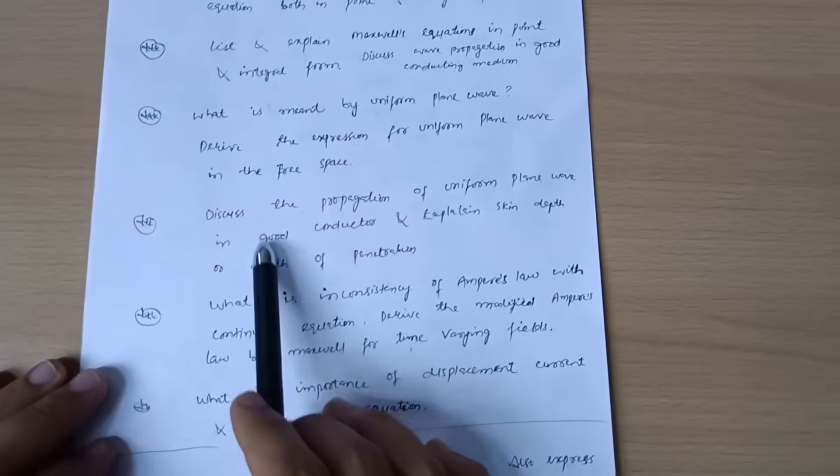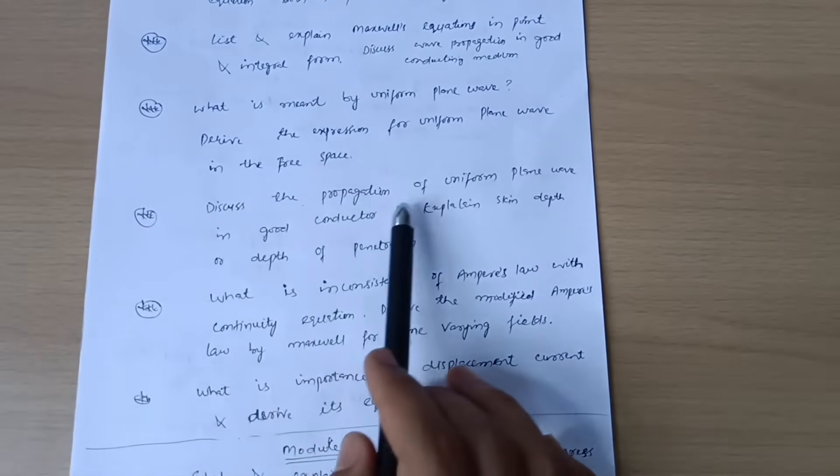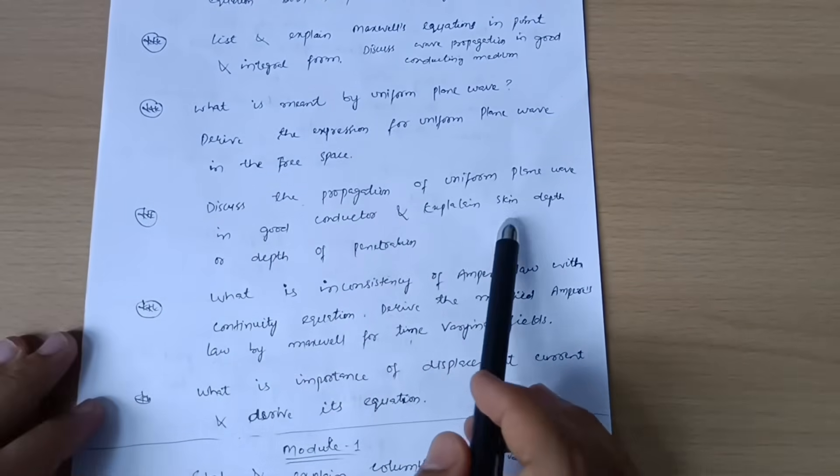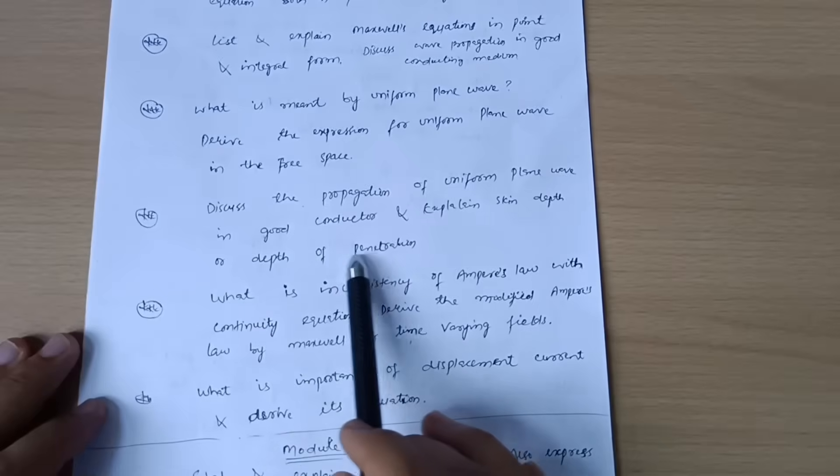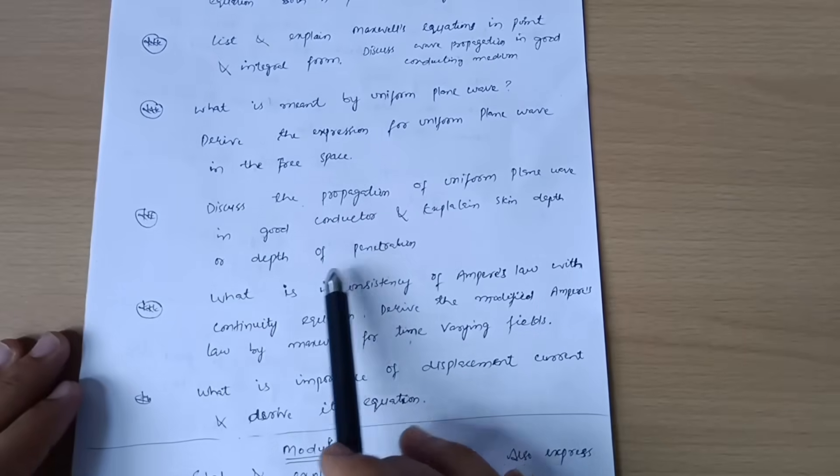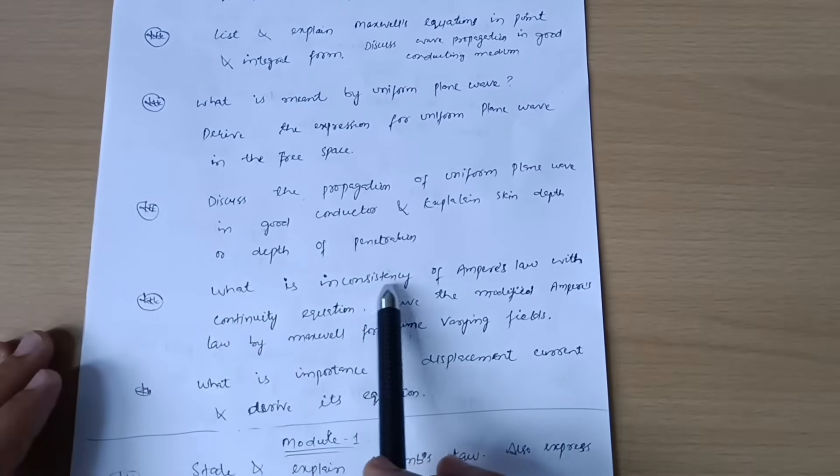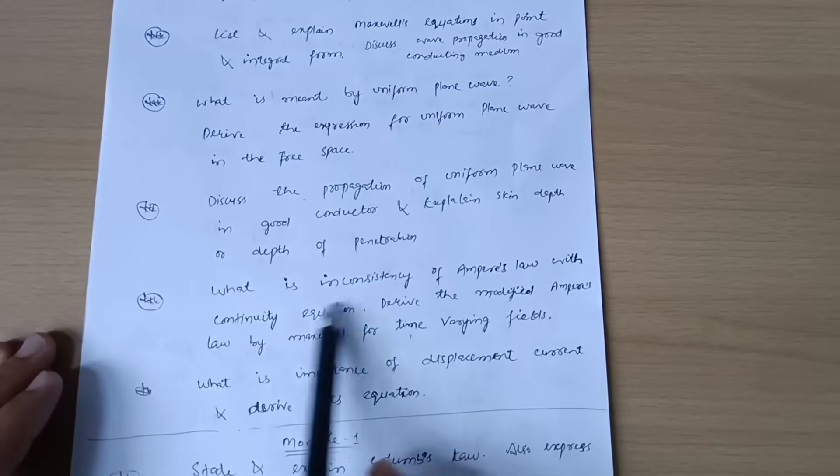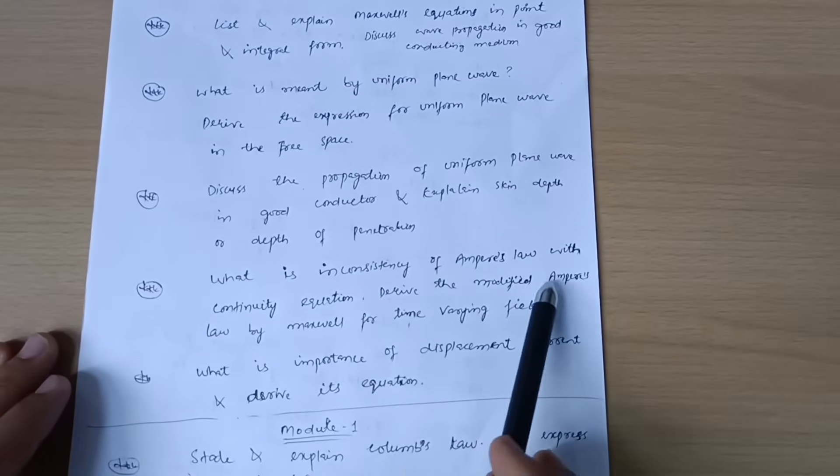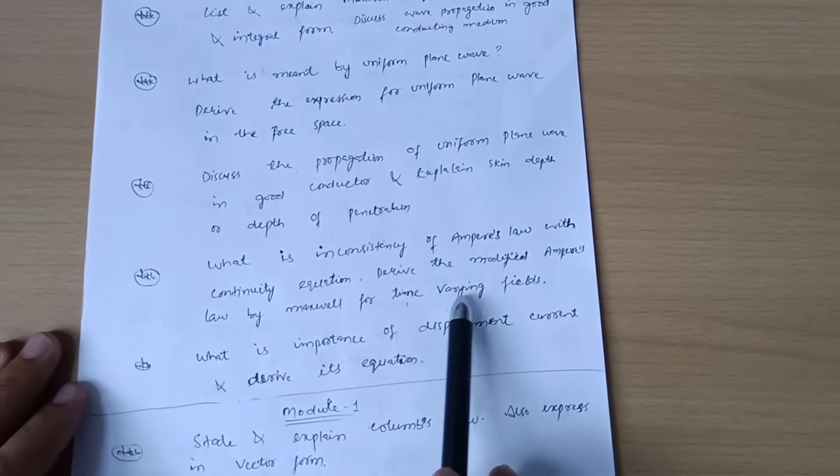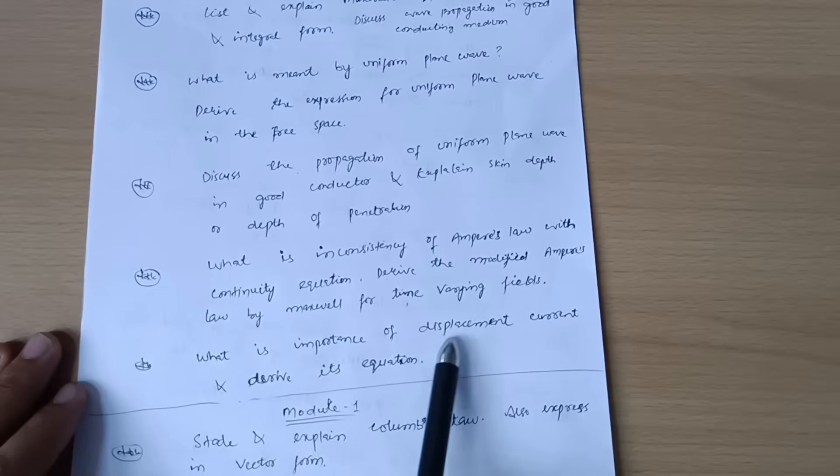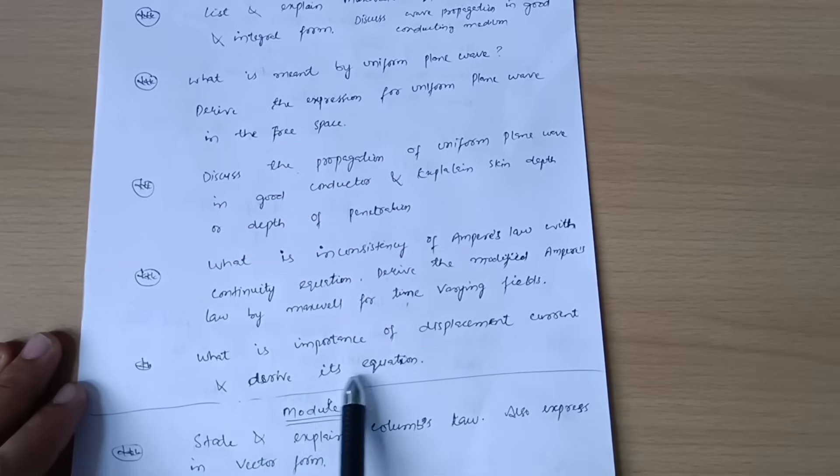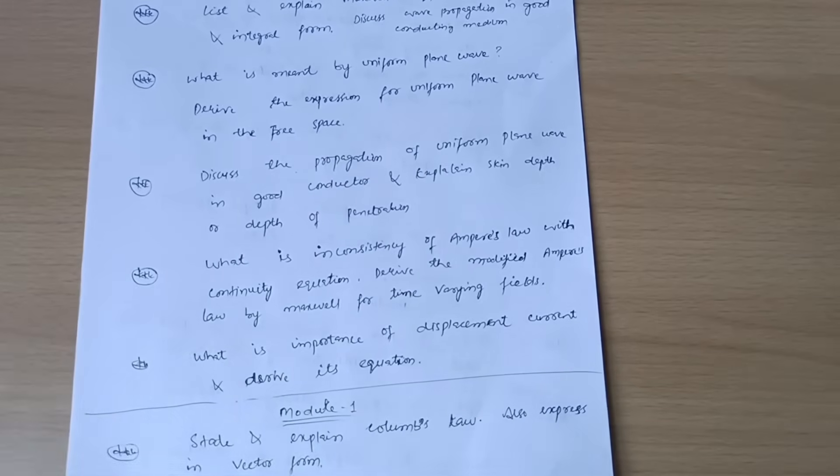What is meant by uniform plane wave? Derive the expression for uniform plane wave in free space. Discuss the propagation of uniform plane wave in good conductor and explain skin depth or depth of penetration. What is inconsistency of Ampere's law with continuity equation? Derive the modified Ampere's law by Maxwell for time varying fields. What is the importance of displacement current and derive its equation?